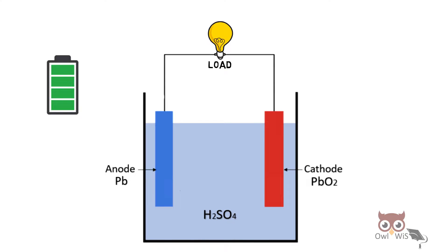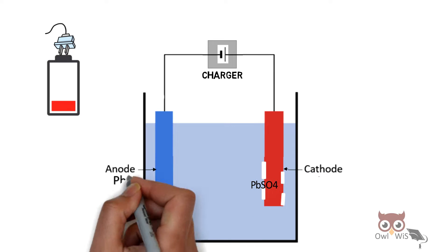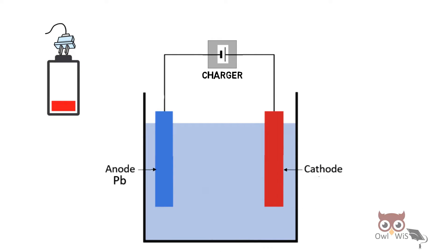This lead sulfate is formed when the battery is fully discharged. Again, when the battery is charged, the lead sulfate converts back to lead and lead peroxide, giving away the electrolyte sulfuric acid. This is the charged state.